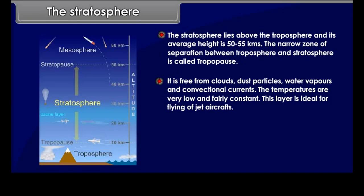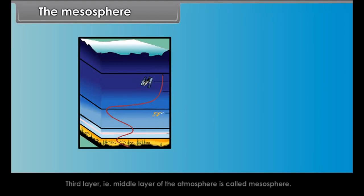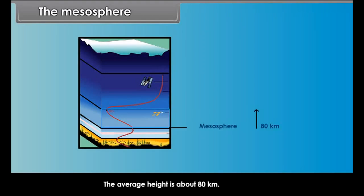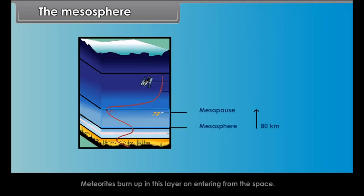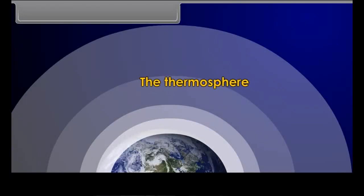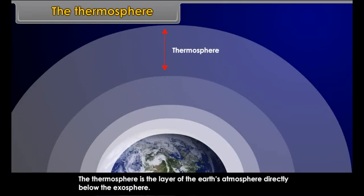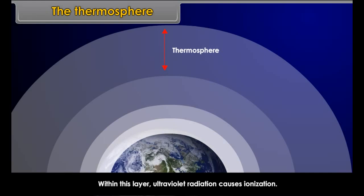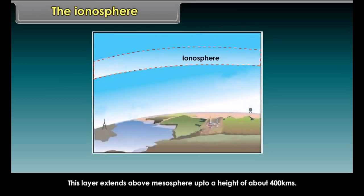The stratosphere lies above the troposphere and its average height is 50 to 55 km. The narrow zone of separation between the troposphere and stratosphere is called the tropopause. It is free from clouds, dust particles, water vapours and convectional currents. The temperatures are very low and fairly constant. This layer is ideal for flying of jet aircrafts. One important feature of the stratosphere is that it contains a layer of ozone gas which protects us from the harmful effects of sun rays.